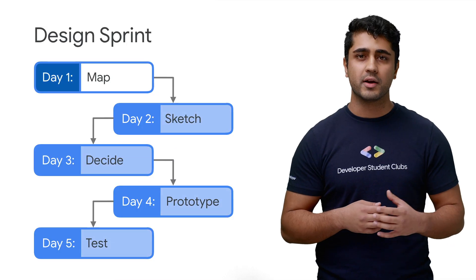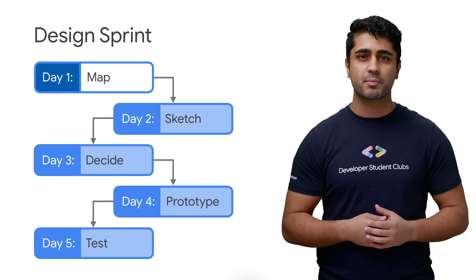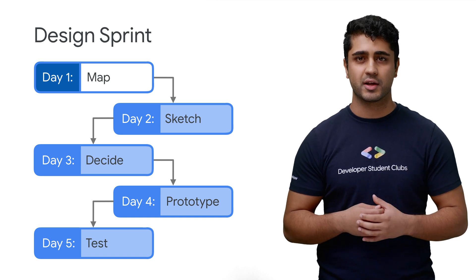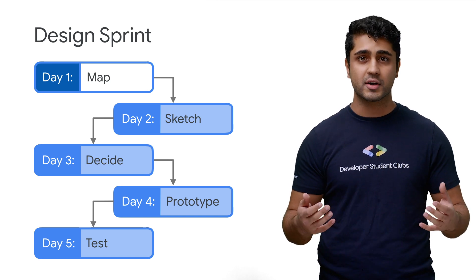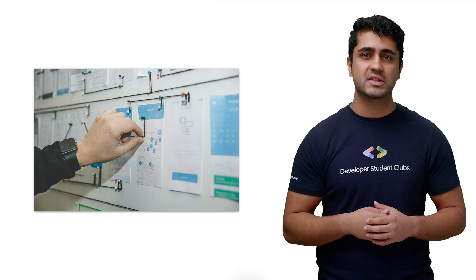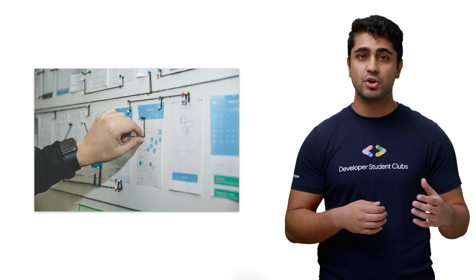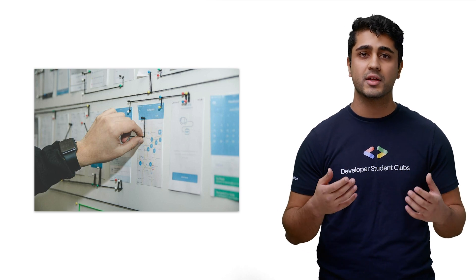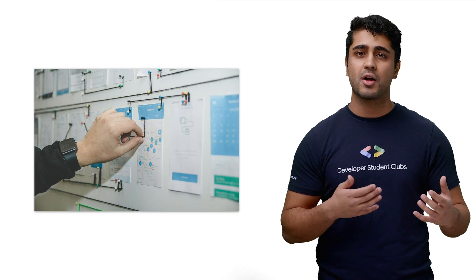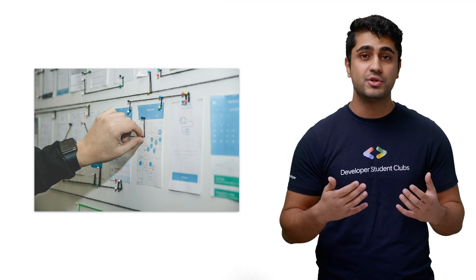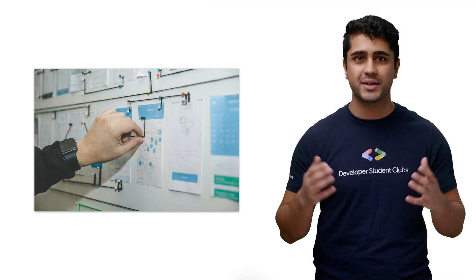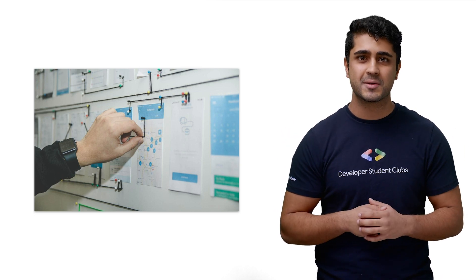On day one, you map out the problem and choose a specific target. So for our example, we would map out how students are currently finding study spots, and who our target audience will be. Maybe college first-years, who don't yet know these cool, secret places on campus.